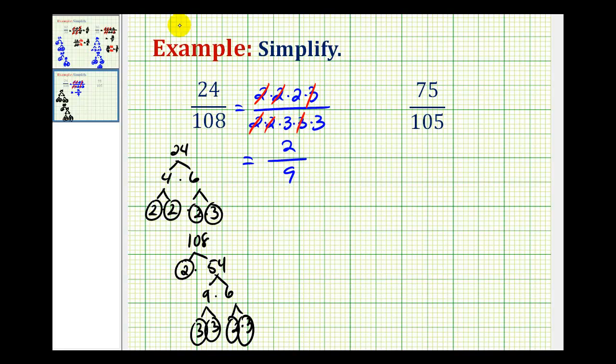Meaning if we knew our multiplication tables really well, it would have been faster to divide the numerator and denominator by 12 to obtain the simplified fraction of two-ninths. But that does get much more difficult as these numbers get larger and larger.